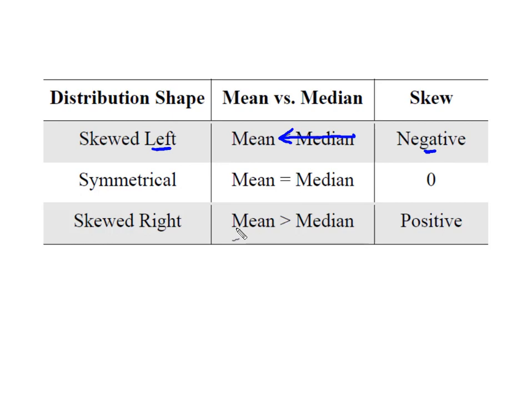When I look at the value of the mean and it is greater than the median, then I know I have a positive or a right skew. When the mean is equal to the median, I have no skew and I have that nice symmetrical bell-shaped curve.